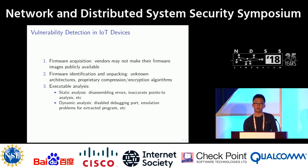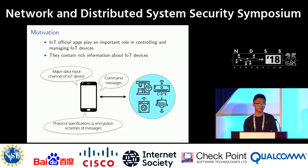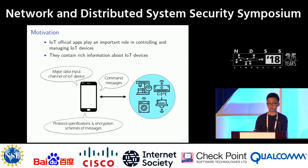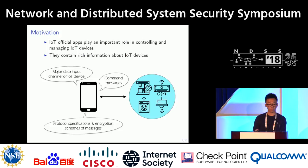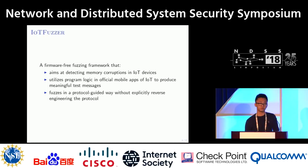In this work, we provide an alternative approach to identify vulnerabilities in those devices. We found that IoT official apps play an important role in controlling and managing IoT devices — they contain rich information, serve as the major data input channel, contain command messages, and preserve protocol specifications and encryption schemes. Therefore, we built a tool called IoT Fuzzer: a firmware-free fuzzing framework that detects memory corruptions by utilizing program-specific logic in those apps to produce meaningful test cases.